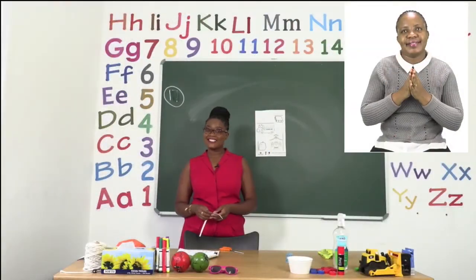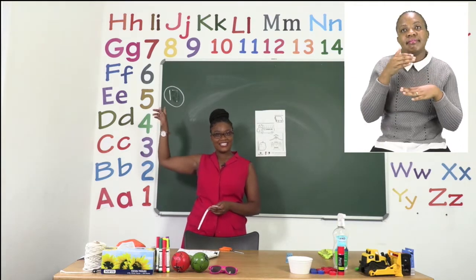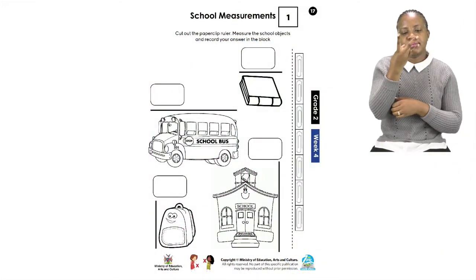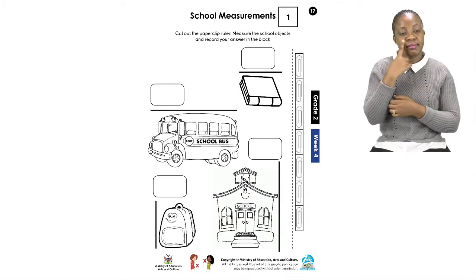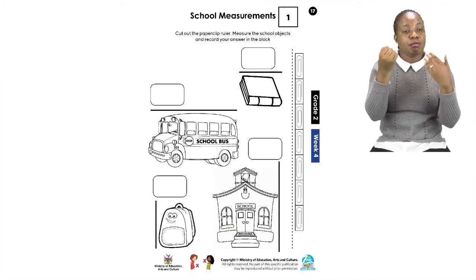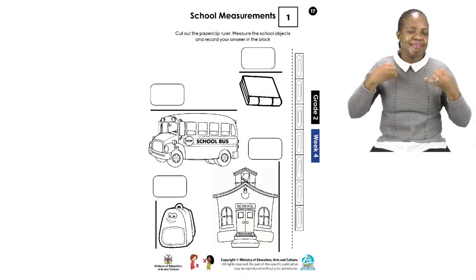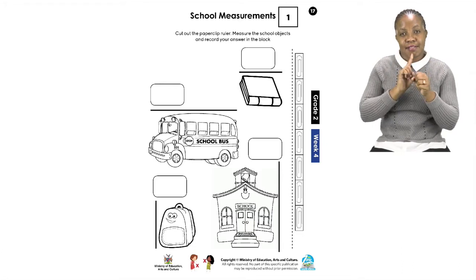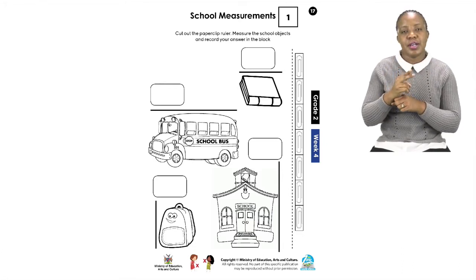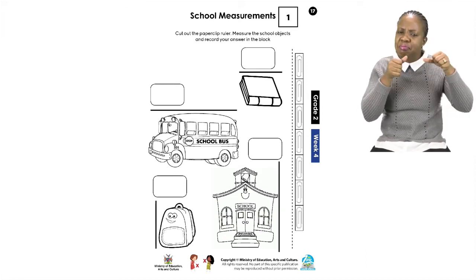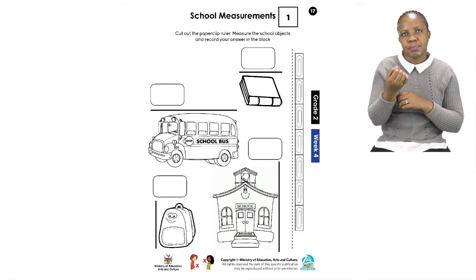Our next exercise, boys and girls — let us turn to page 17. On page 17 you can see that we have school measurements to do. This is going to be so much fun. You are going to be asked to cut out and measure using paper clips as a ruler.